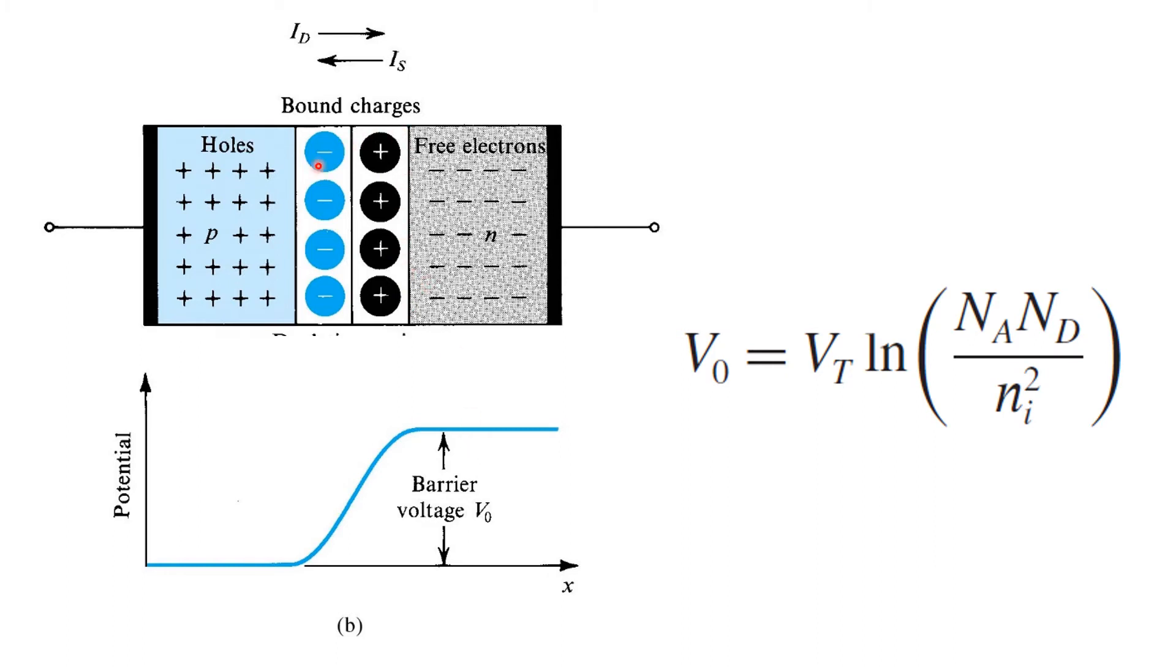You'll notice that the depletion region, having a very low concentration of charge carriers, is an insulator, whereas the doped semiconductor regions, P and N on the left and right of the junction, have high carrier concentrations and therefore are pretty good conductors. So, in steady state, the P-N junction looks kind of like a capacitor.